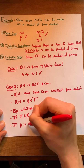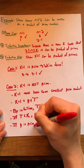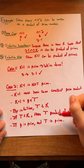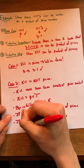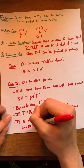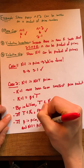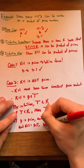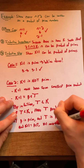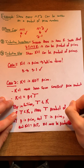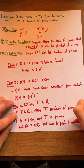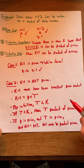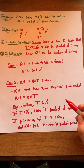So, if p is prime and t is a product of primes, and k + 1 = p × t, then we've shown that k + 1 must be a product of primes. That means, by strong induction, we have proven that every number greater than or equal to 2 can be written as a product of prime numbers.